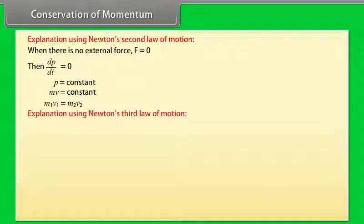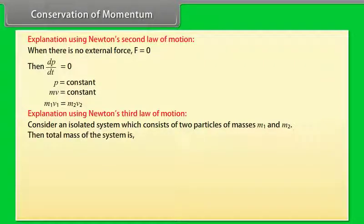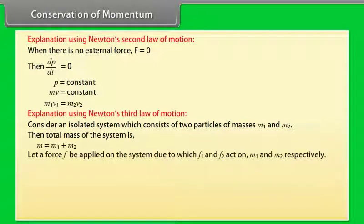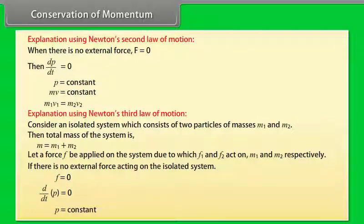Using Newton's third law: consider an isolated system of two particles of masses M1 and M2. The total mass of the system is M = M1 + M2. Let a force F be applied on the system, due to which F1 and F2 act on M1 and M2 respectively. If there is no external force on the isolated system, then F = 0, d/dt of P = 0, so P = constant. Hence the law of conservation of linear momentum is proved.